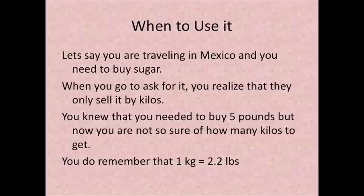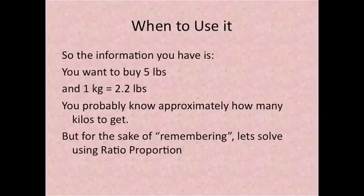Let's say you are traveling in Mexico and you need to buy sugar. When you go to ask for it you realize that they only sell it by kilos. You knew that you needed to buy 5 pounds but now you are not so sure of how many kilos to get. You do remember that 1 kilogram is equal to 2.2. So the information you have is you want to buy 5 pounds and 1 kilogram is equal to 2.2 pounds.